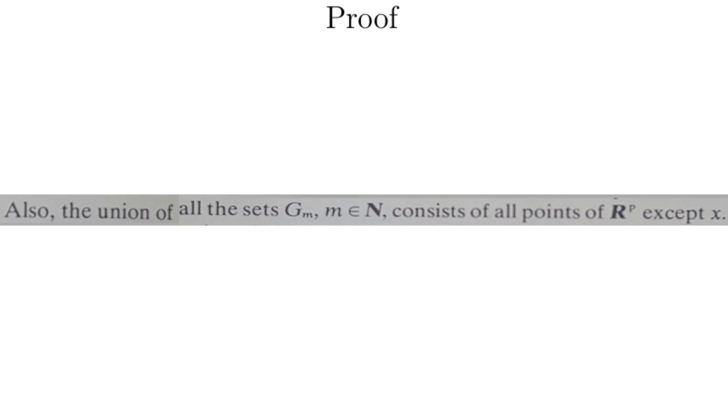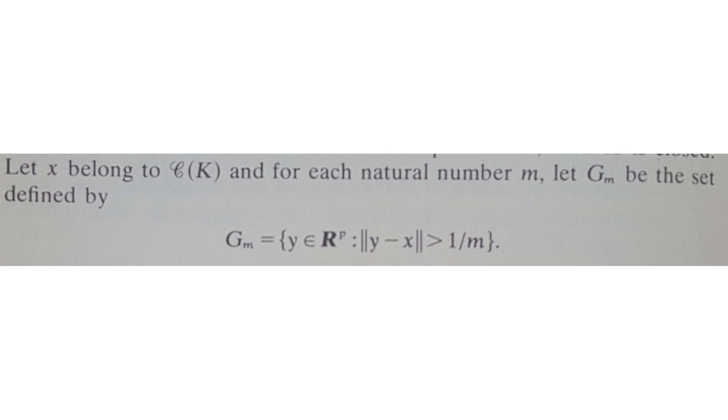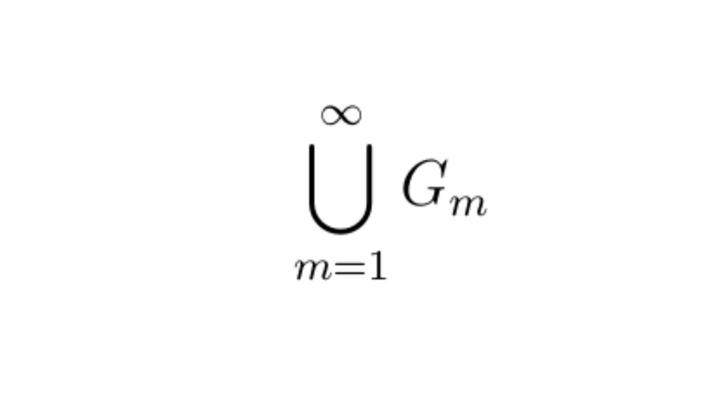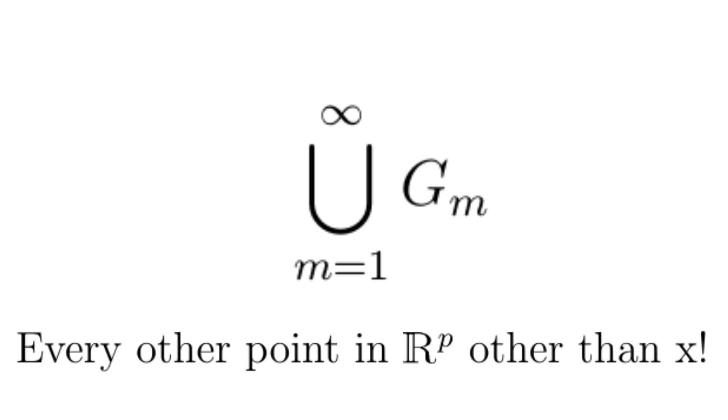Proof. Also, the union of all the sets G_m, m in the natural numbers, consists of all points of R^p except x. What this says is that if we look at what happens as m gets bigger and bigger, in the definition for G_m, the distance between y and x is greater than something that is getting smaller and smaller. So y and x can get closer and closer together. But they can't be the same, otherwise the distance between y and x would be 0, and the definition says that the distance between y and x must always be positive. So if we take all possible points and all possible G_m's, the only thing not in the union is the point x, the very point that would make the distance between y and x zero.